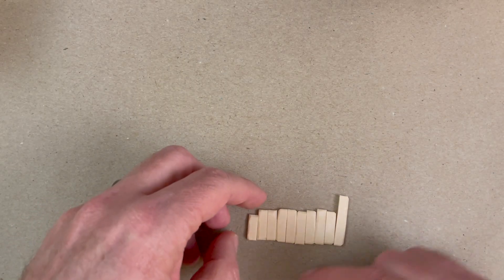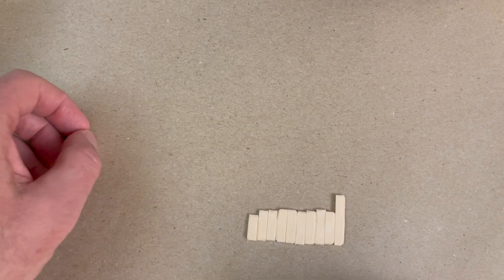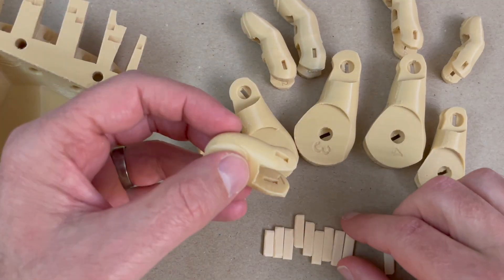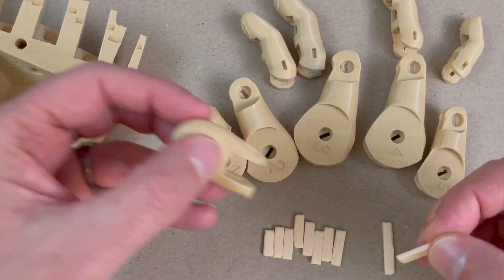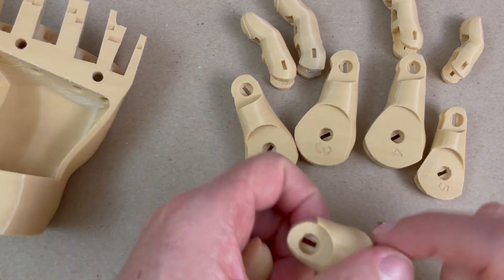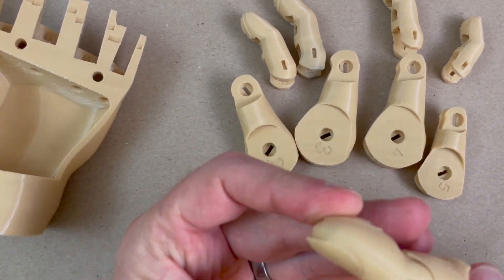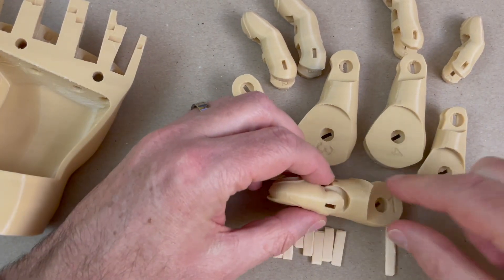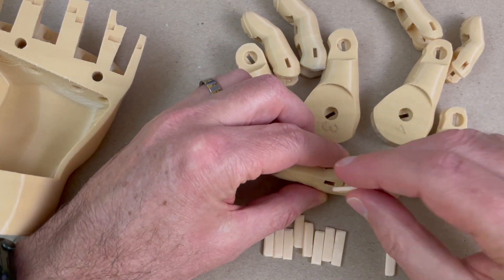All right, now that we've got everything clean, let's start assembling things. I've got these hinges here, and I've sort of lined them up in order of size, just to make it easier to identify. I start putting the thumb together, because it's the hardest one to put together, and I like to know that everything's going to fit okay.